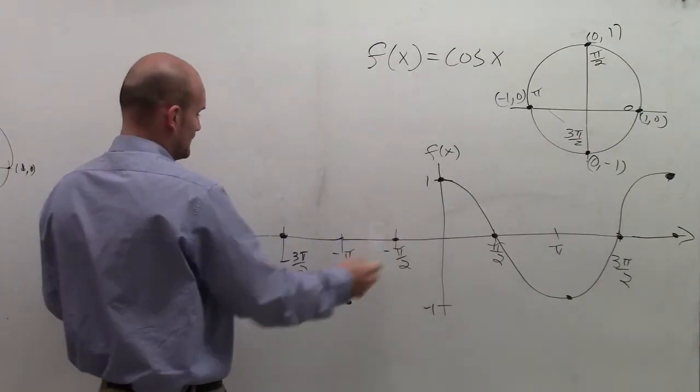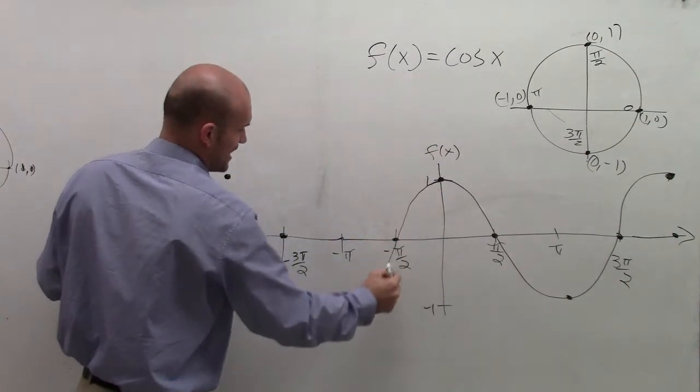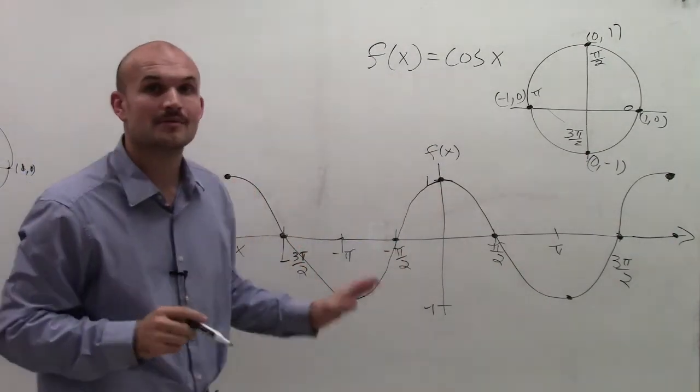And at cosine of negative 2π, my value is back up at 1. So you can see, as connecting these points, I'm now able to graph my cosine function.